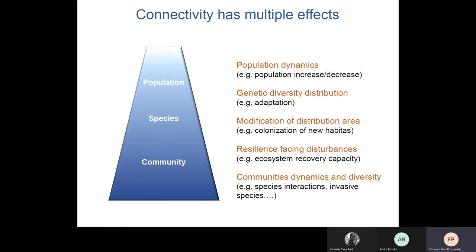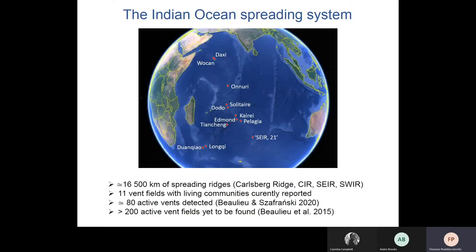Connectivity affects ecosystems in many different ways. At the population level it is one of the main drivers of population expansions or reductions through the supply of new settlers. At the species level, connectivity influences the distribution of genetic diversity, which may lead to local adaptations, and also drives modifications in the distribution area of species. At the community level it contributes to resilience and recovery capacity through provision of colonists that may be key species in ecosystem functioning, and more generally contributes to the diversity and dynamics of the whole ecosystem.